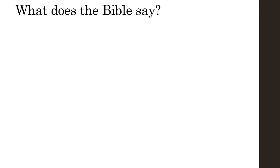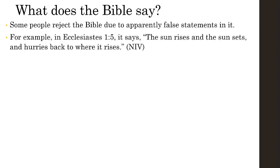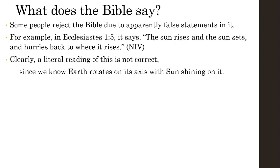So what does the Bible say? Some people reject the Bible due to its apparently false statements. For example, in Ecclesiastes chapter 1 verse 5, it says: 'The sun rises and the sun sets and hurries back to where it rises.' As we look at that statement, we know it's not due to the Sun actually rising or actually setting. This literal reading is not correct, since we know that the Earth rotates on its axis with the Sun shining on it. So what do we do with a verse like this in the Bible?